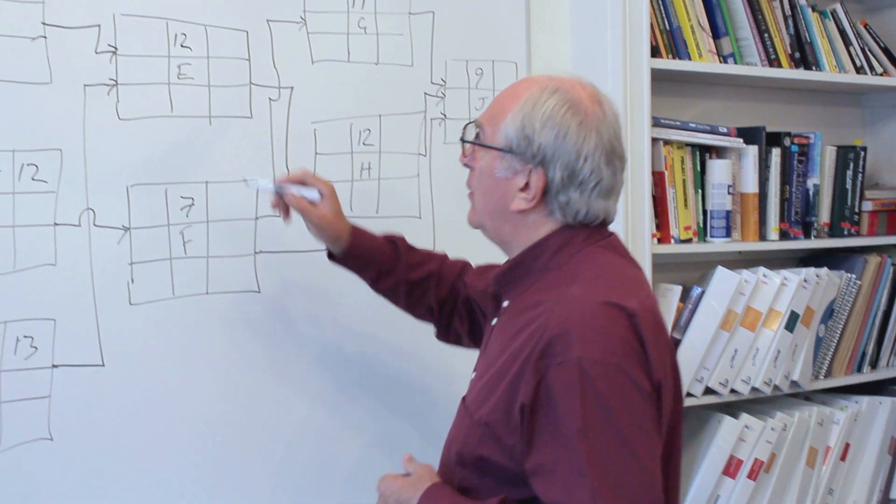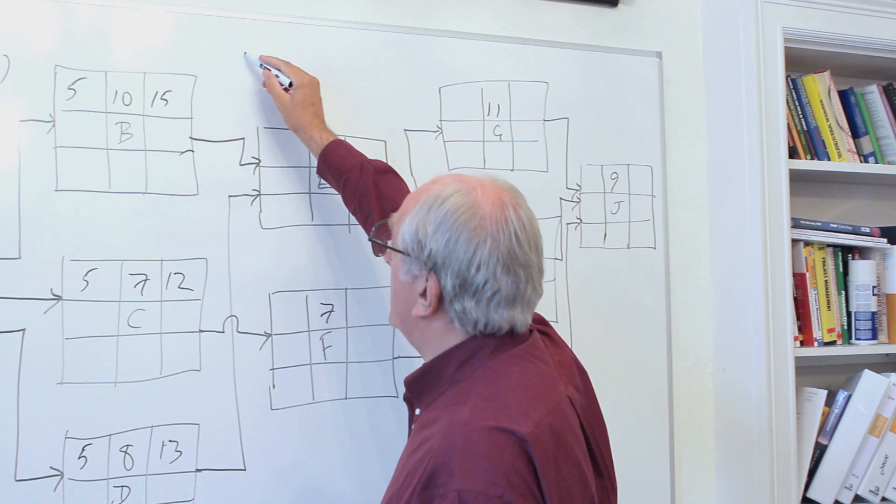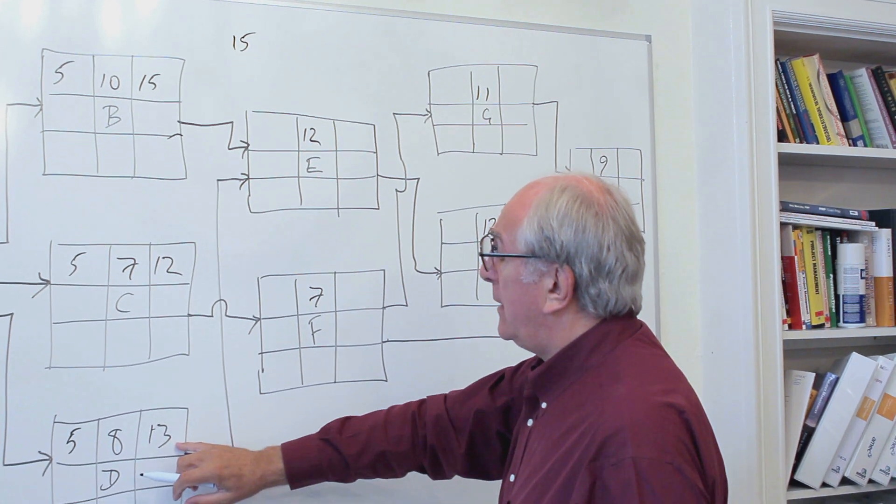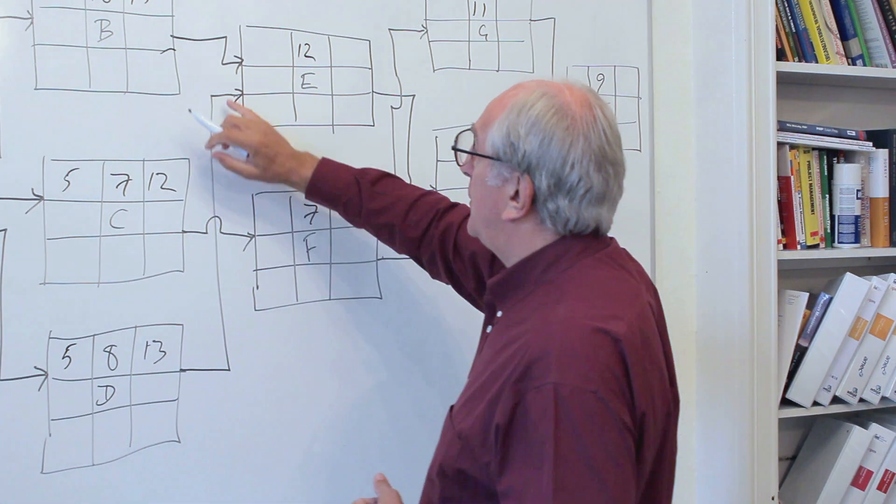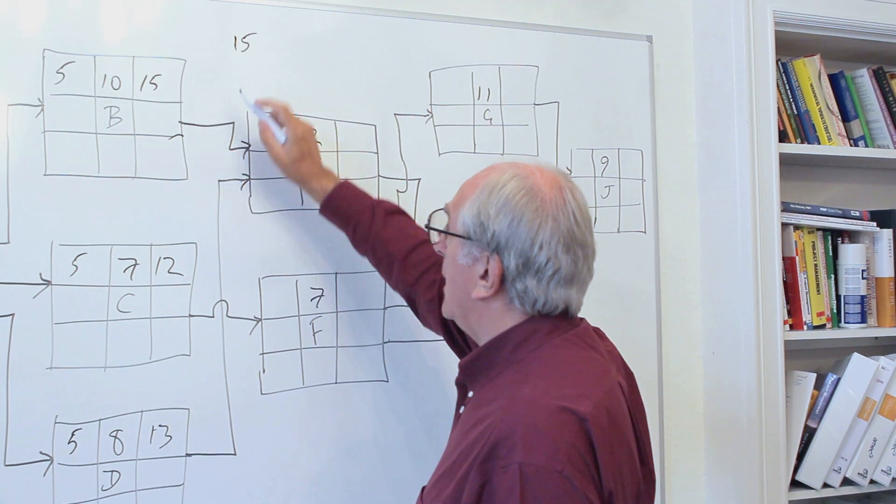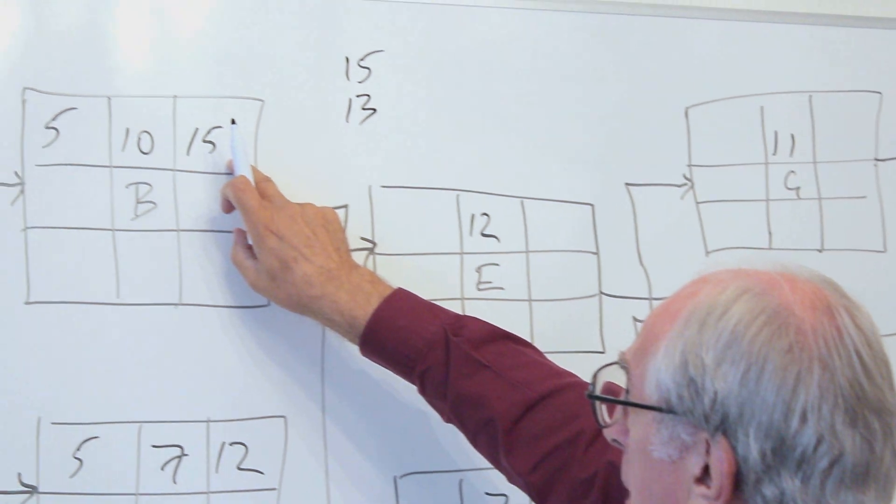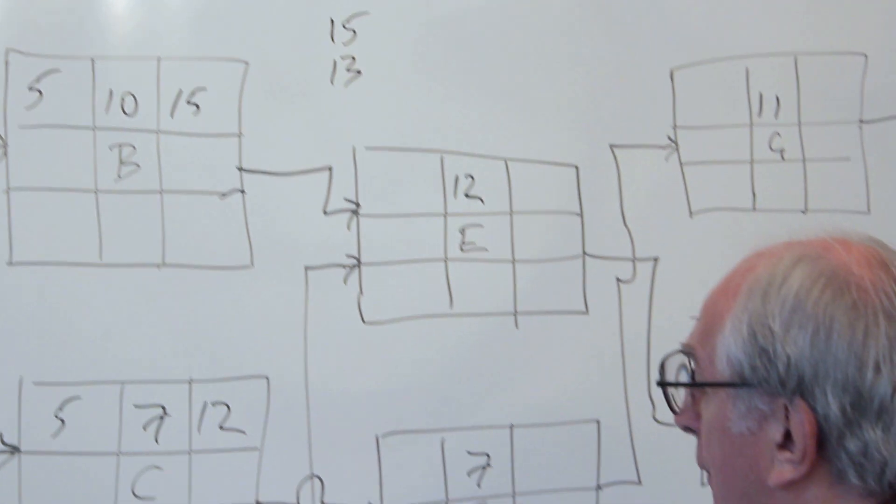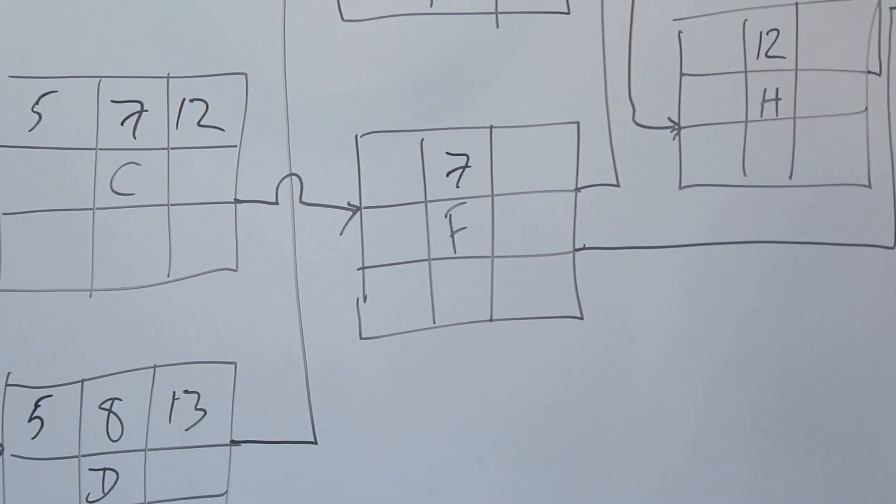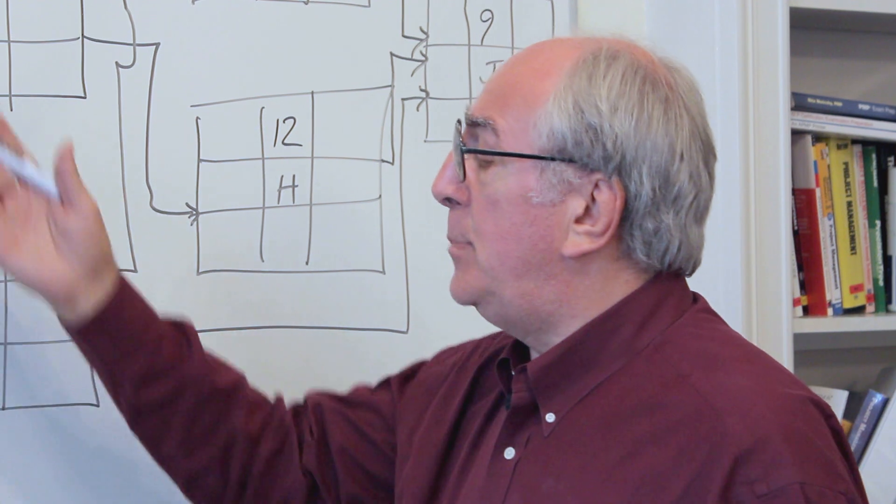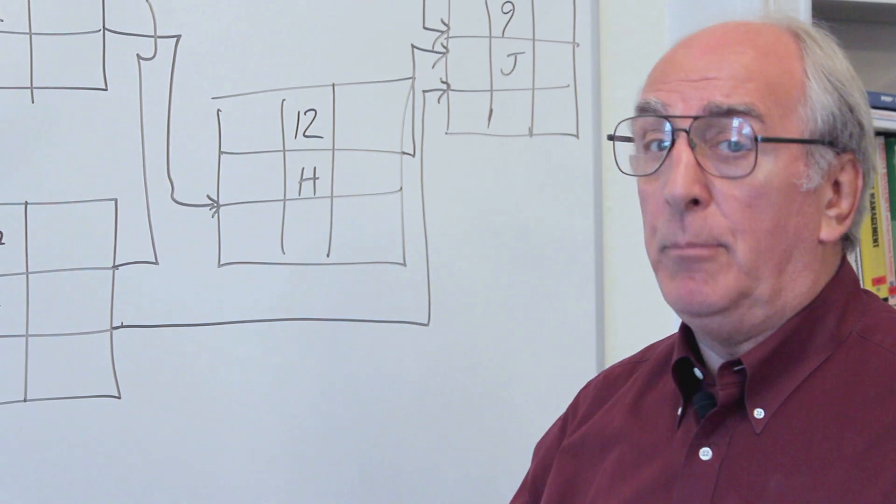Well there's two choices there because it looks like we could start it by the same reasoning as before at time period 15, or from D where the late finish moves up to become the early start of E, it could be 13. So it could be the early finish of B or the early finish of D. We have to choose between those.